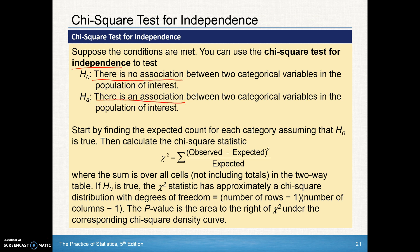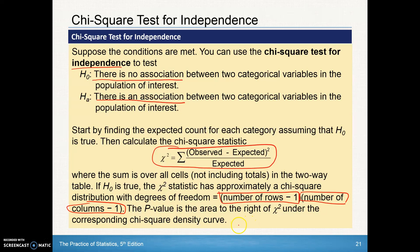We'll start by finding the expected counts using the familiar formula and add up all those cells on a two-way table. If the null is true, the chi-square statistic has approximately a chi-square distribution with degrees of freedom found by taking the number of rows minus one times the number of columns minus one. The p-value is the area to the right of our chi-square statistic.